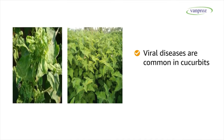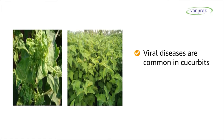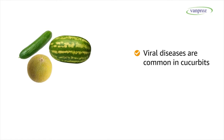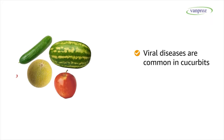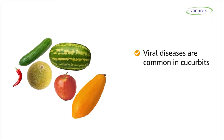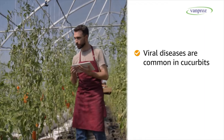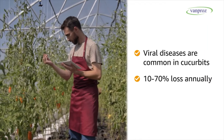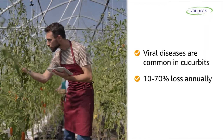Viral diseases are very common in crops like cucurbits, such as cucumber or gherkins, watermelon, muskmelon, apples, gourds, chili, papaya, pulses, and banana. Indian farmers are facing 10-70% loss annually because of viral diseases.